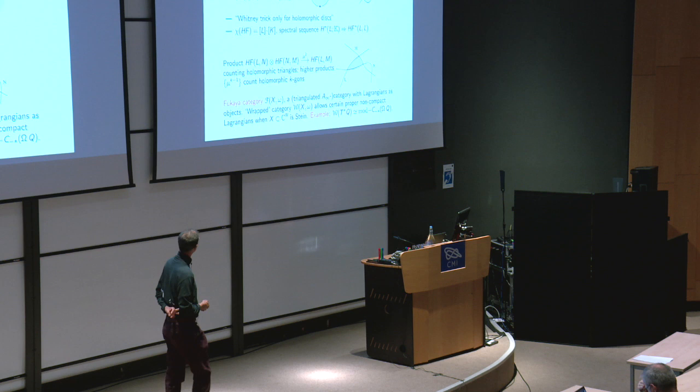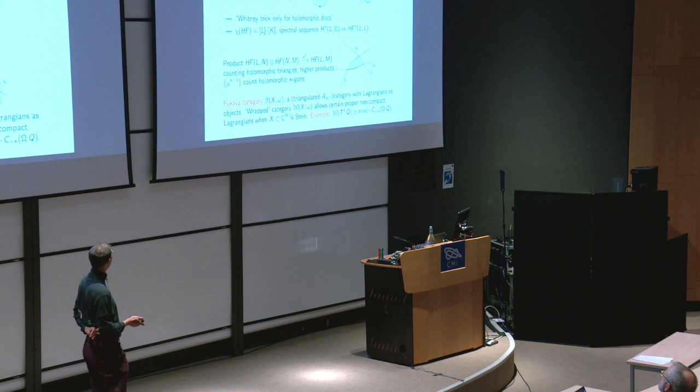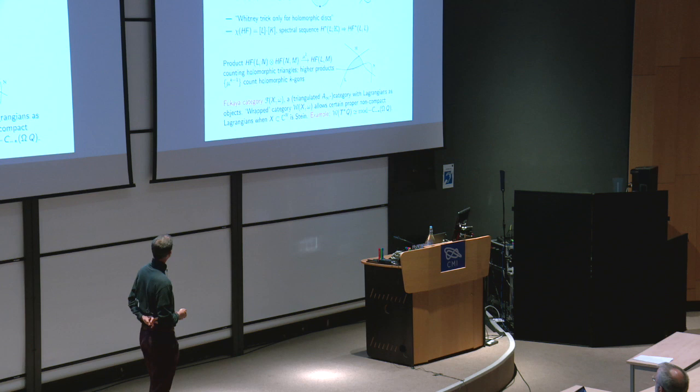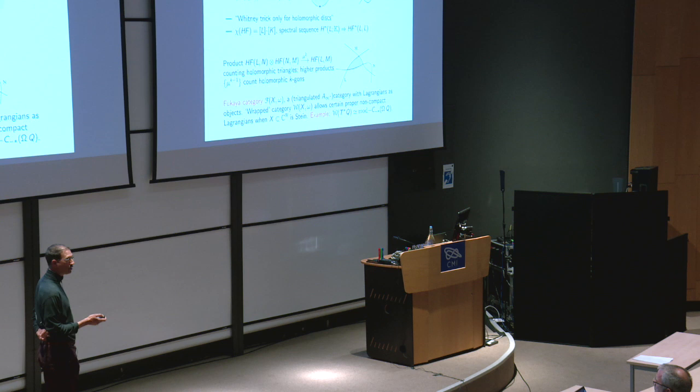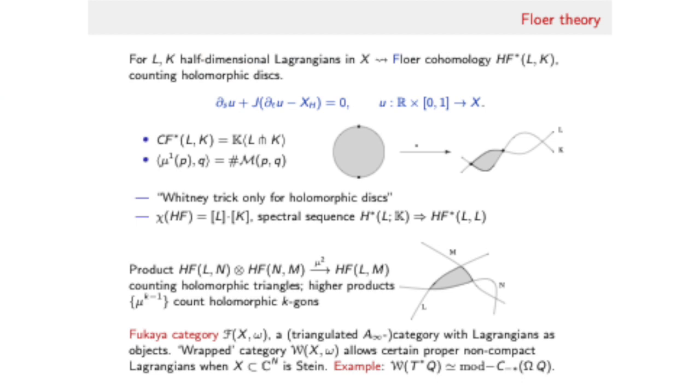The simplest instance of this algebra is what's called the Floer cochain complex. You take a pair of these half-dimensional subspaces. Typically they'll intersect in a finite or discrete set. You take those to be the generators of a chain complex whose differential counts these holomorphic disks. The Euler characteristic of this complex recovers a classical topological invariant, the homological intersection number of these two half-dimensional submanifolds, so it's some sort of corrected version of classical homology theory.